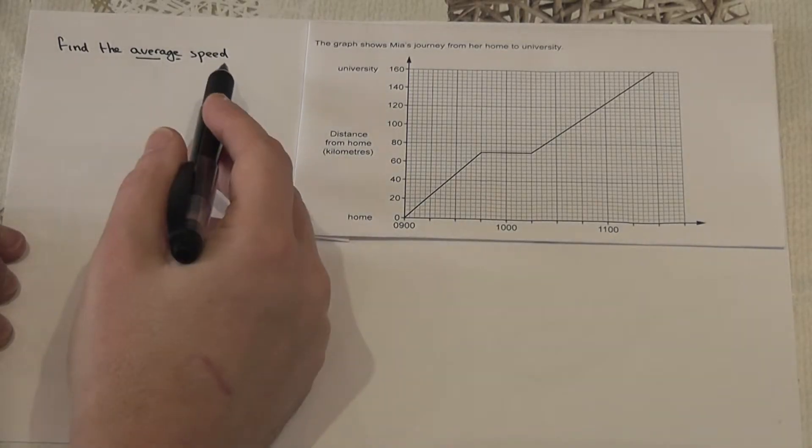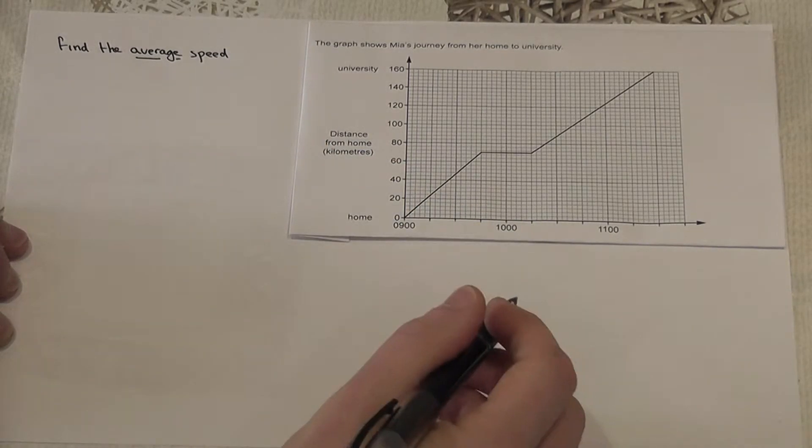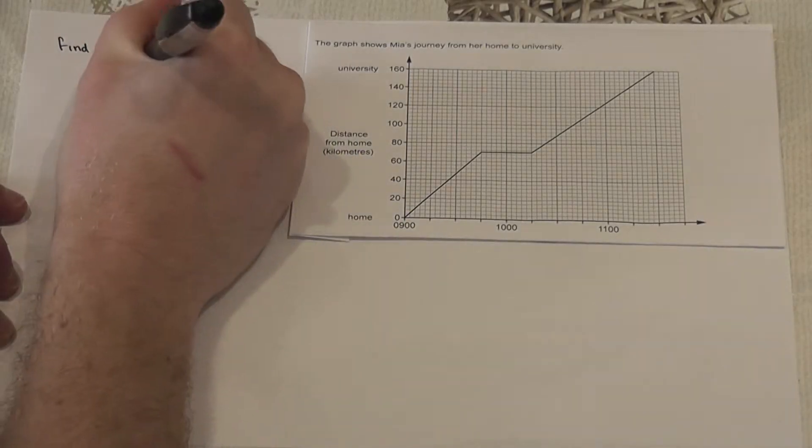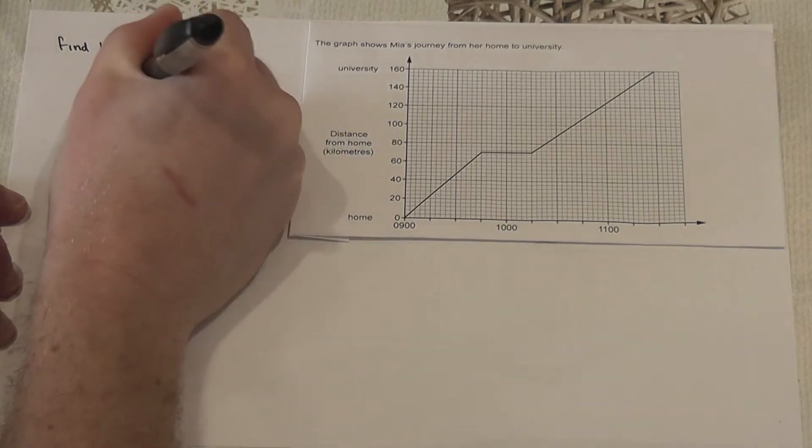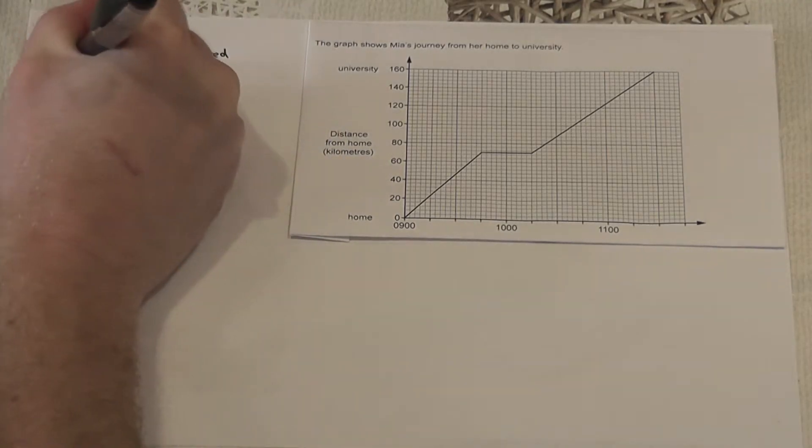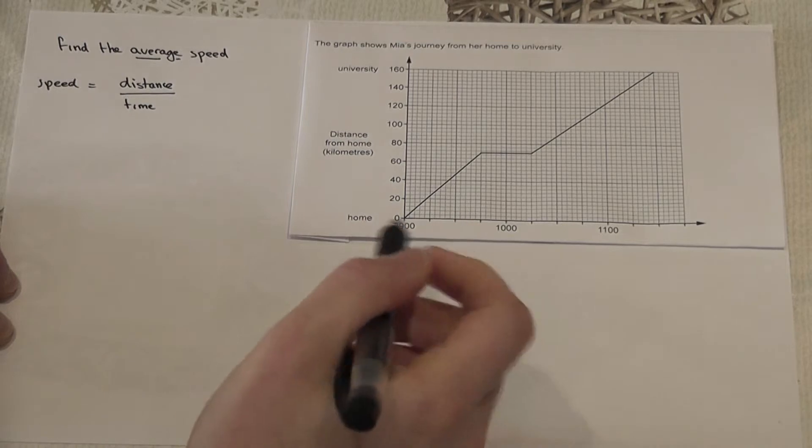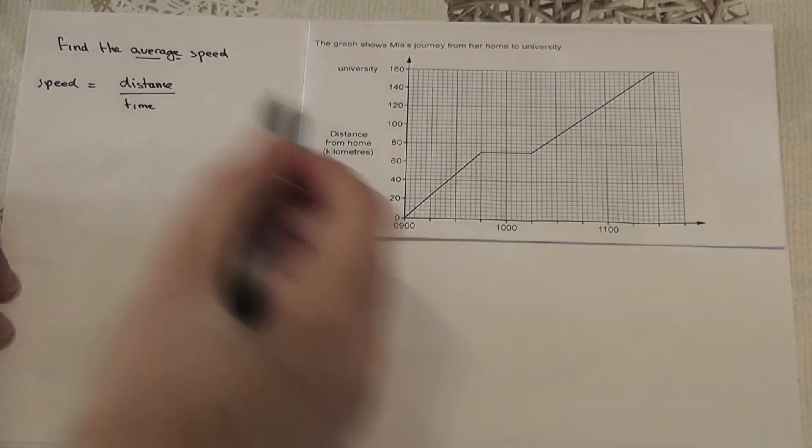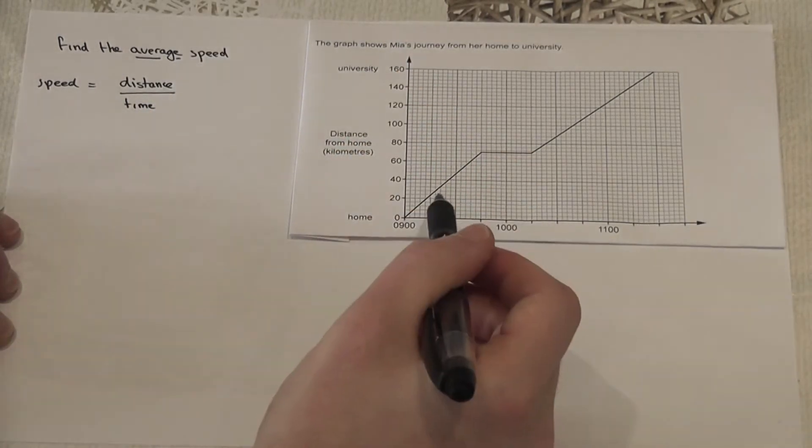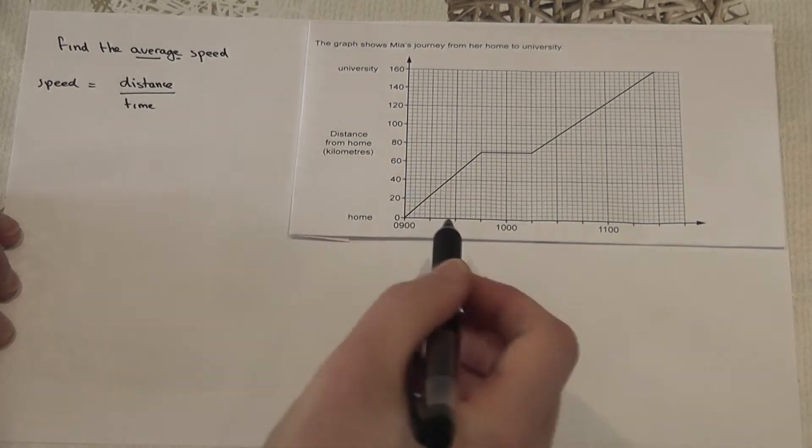Now to find speed or average speed, speed is given by the distance divided by time. And with the average speed it's basically the total distance traveled divided by the total time taken.